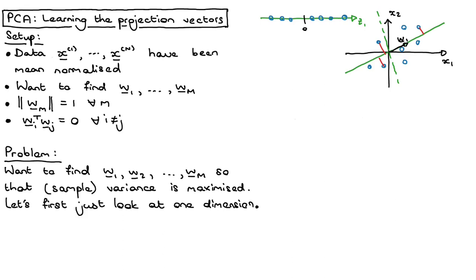Sticking with this one-dimensional example, we can write down an equation for the sample variance when projecting onto this Z1 space. The sample variance is just 1 over N, the sum over all training data points from little n equals 1 to big N, of each projection Z1N minus the sample mean for the first component, squared. That's a simple equation, but there's no W in there yet, so we need to fix that. We can actually simplify it a little bit first.